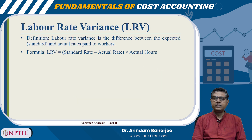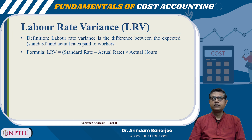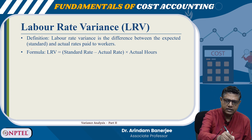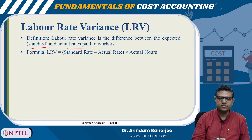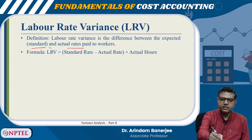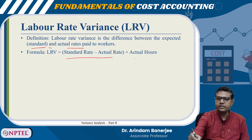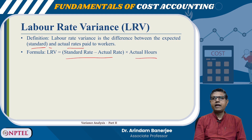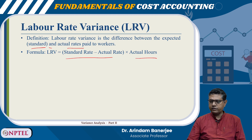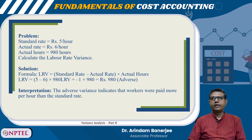Labor rate variance is the difference between the expected or standard rate and the actual rate. The total labor cost variance can happen because of two reasons: the rate is different or the hours are different. The formula is: (Standard Rate − Actual Rate) × Actual Hours.